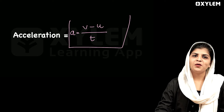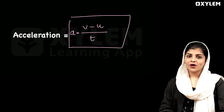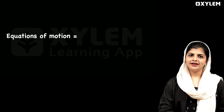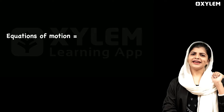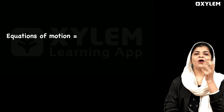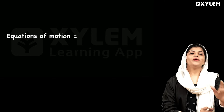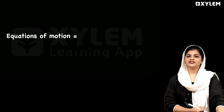So, a is equal to v minus u divided by t. It is a very very important equation. Problems are going to be done on this. Next, we have the core part of the chapter: equations of motion.